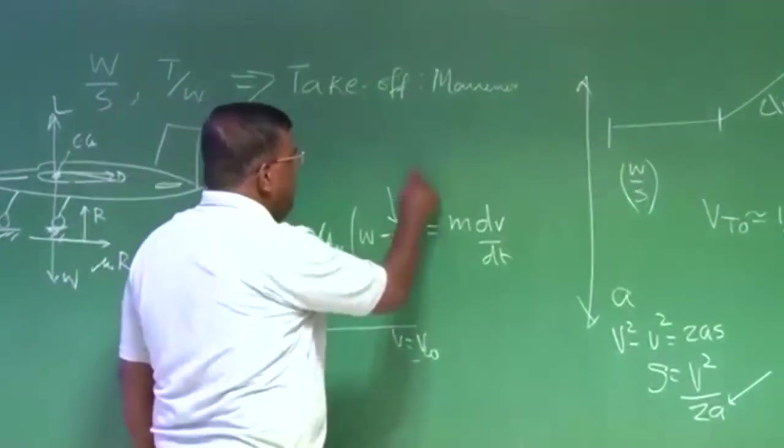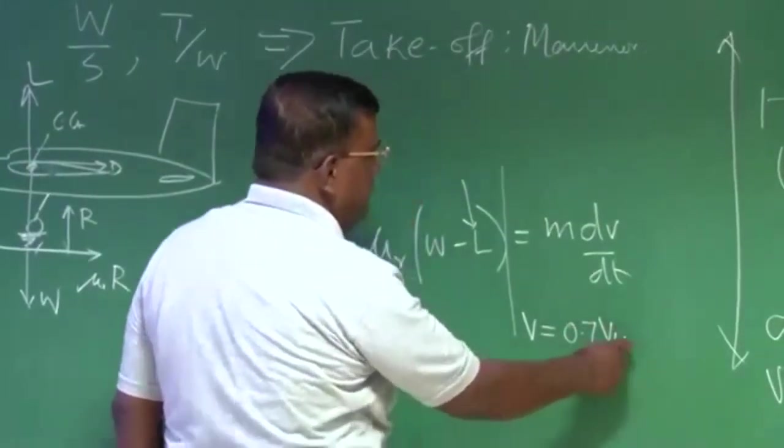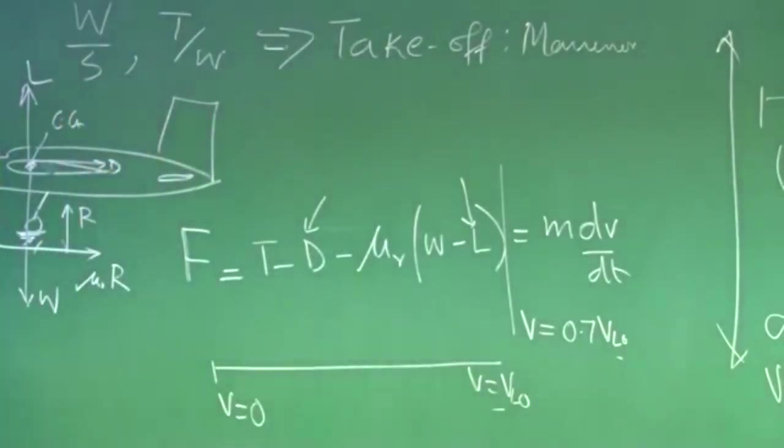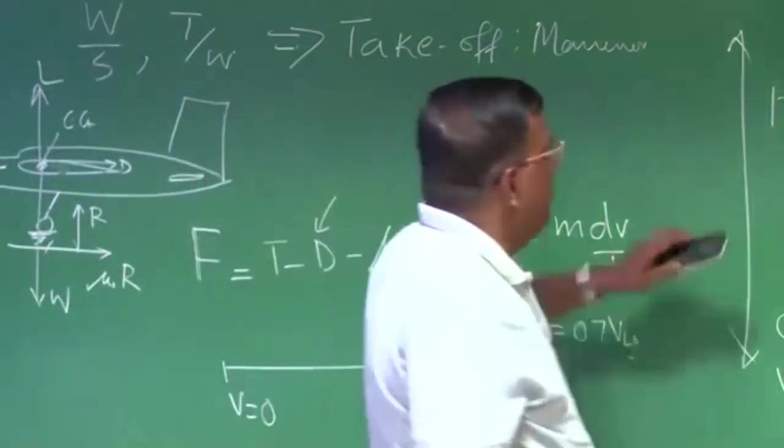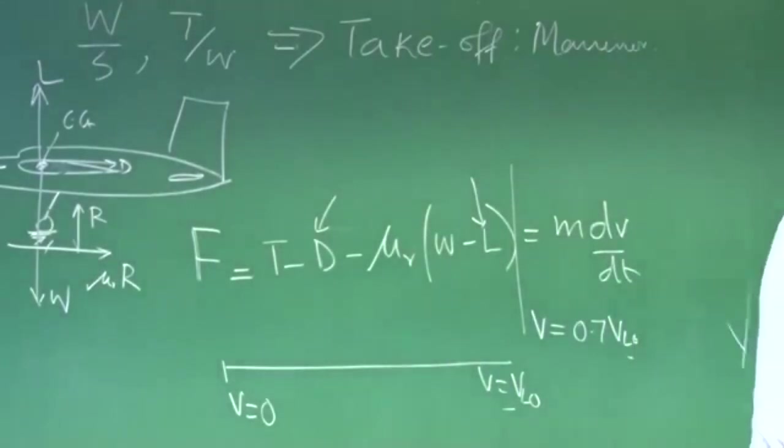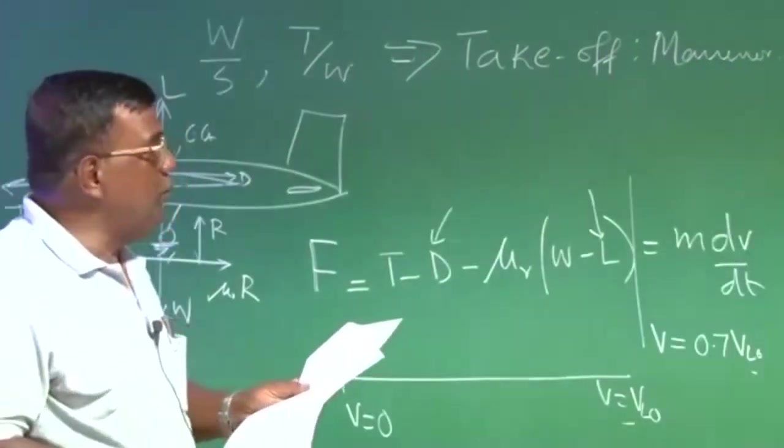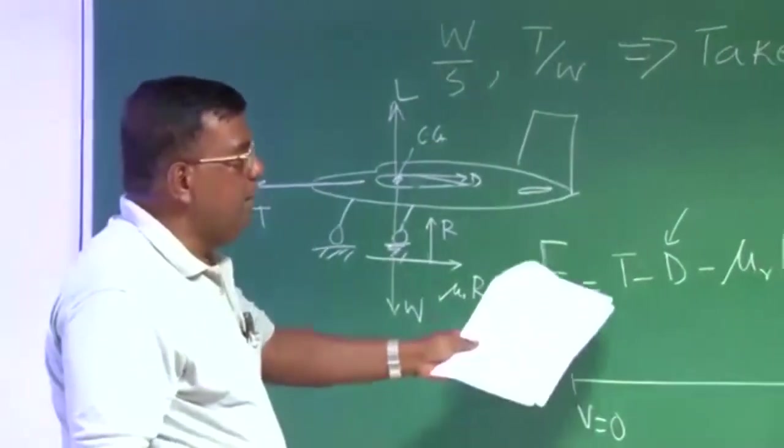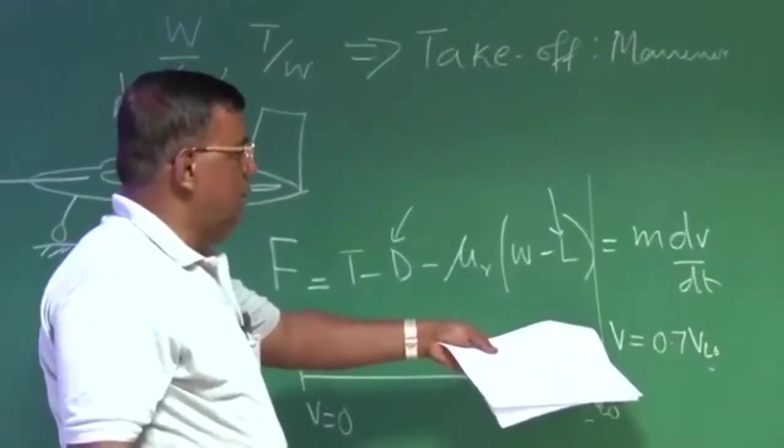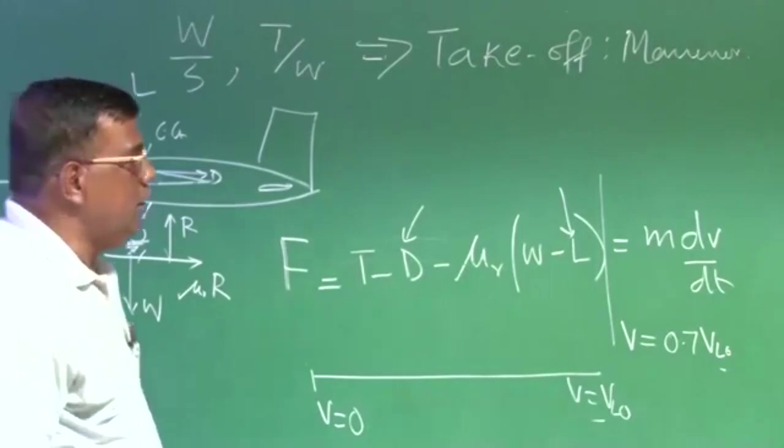Now imagine when you are going for takeoff, you are starting from V equal to 0 to V equal to V lift off, the speed at which you will actually turn the aircraft, increase the angle of attack and go for a climb. The problem is, as I am increasing from V equal to 0 to V equal to V lift off, the drag and lift is also going to change because they are function of speed.